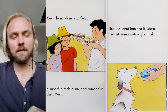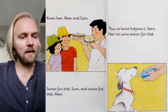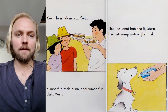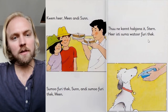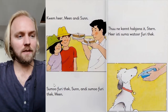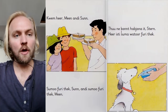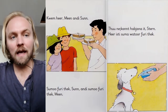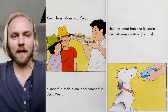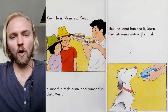Come here, moon and sun. Some for you, sun, and some for you, moon. You cannot — 'ne ne' — cannot have it, star. Here's some water for you.